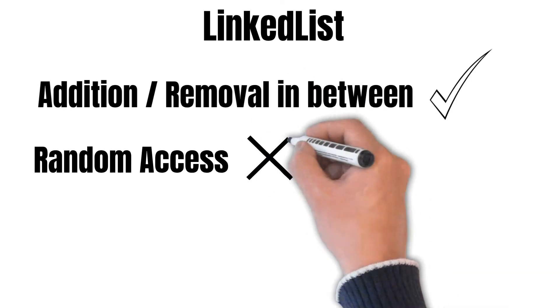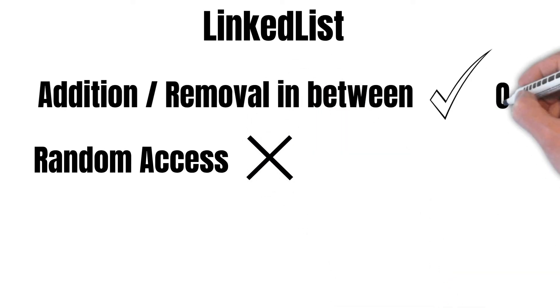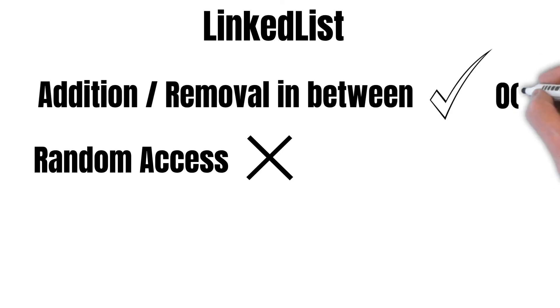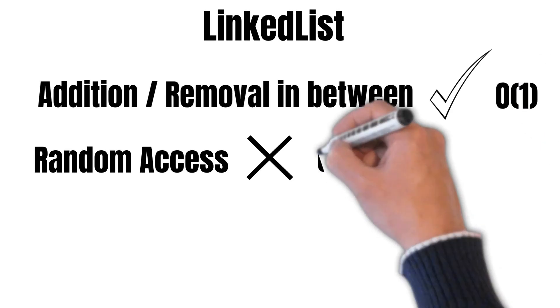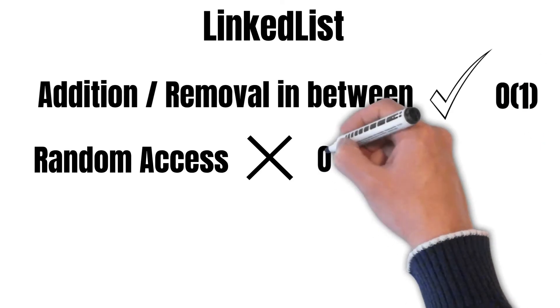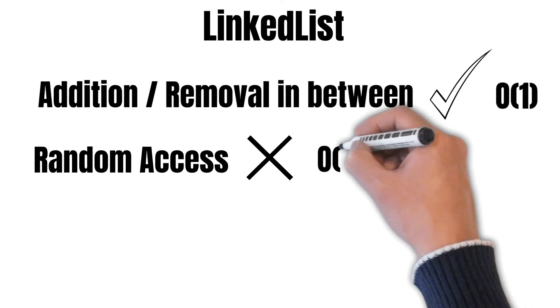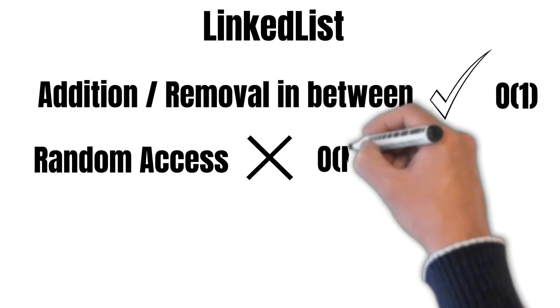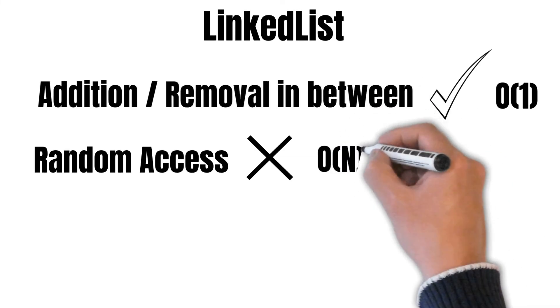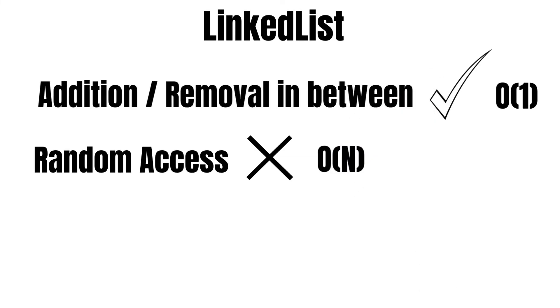In terms of Big O notation, the time complexity for adding or removing an element from a LinkedList is O(1), whereas the time complexity of accessing an element at a particular index is O(n).